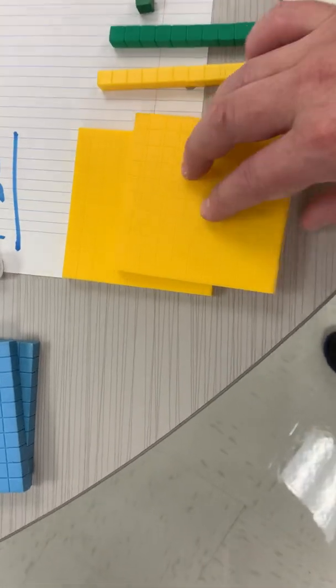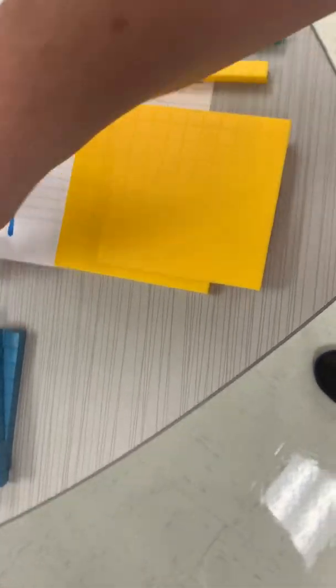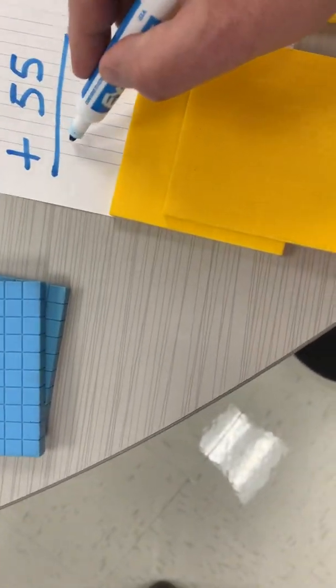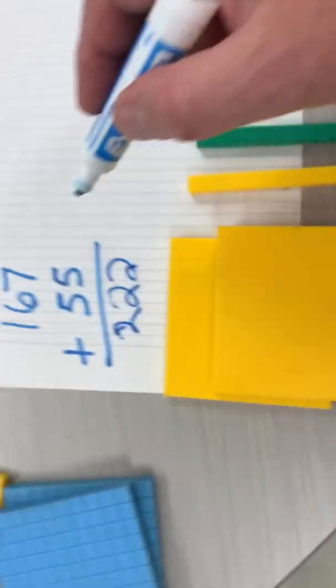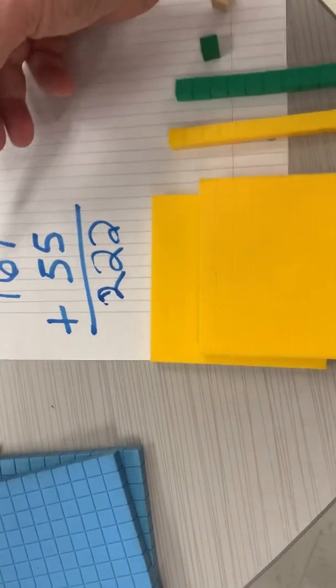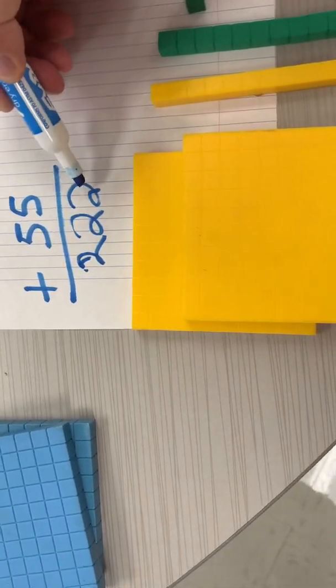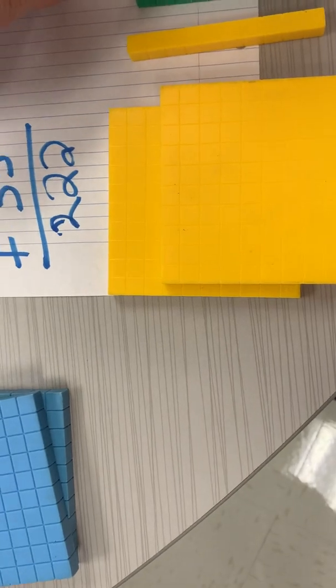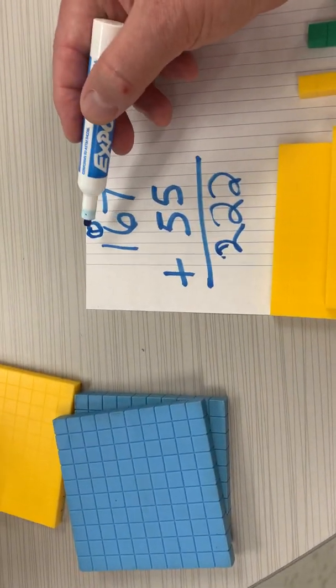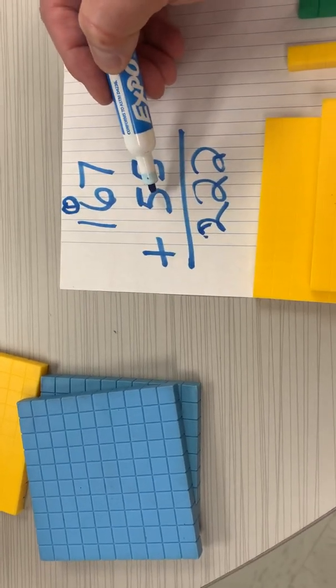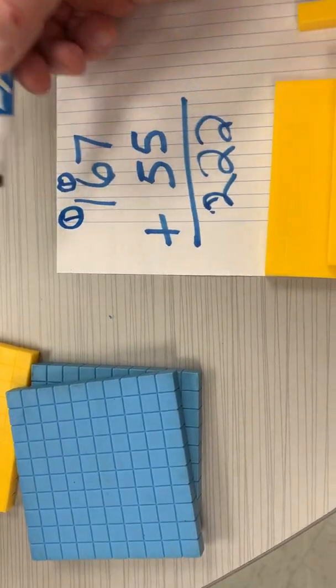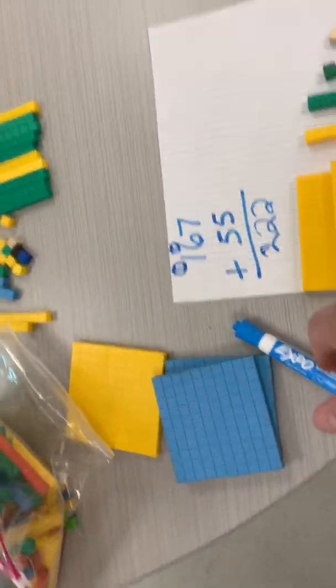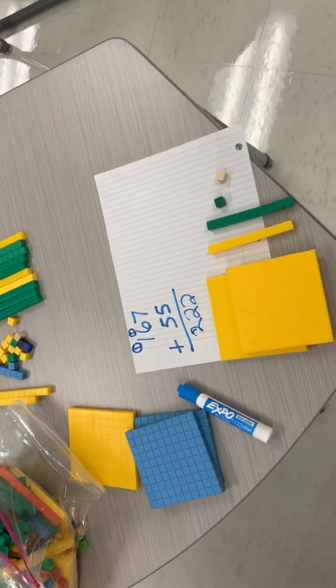So let's see if that is right. I think the answer is 222, so that's what I think the answer is. Let's add those up. 7 plus 5 is 12, carry a 1 up here. So I have 1 plus 6 is 7, plus 5 is 12. There's my 2, I carry another 1 up here. And 1 plus 1 is 2. And that is correct.